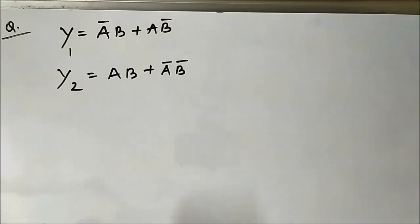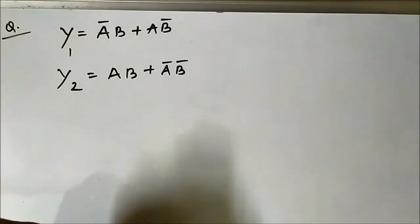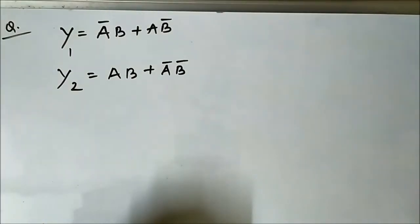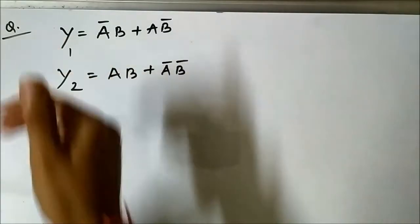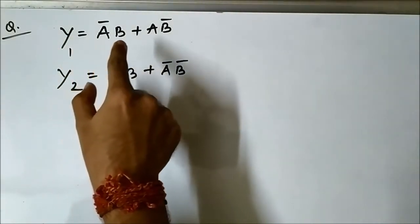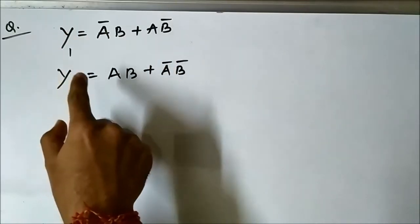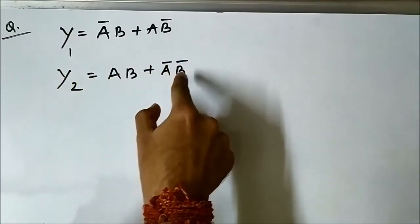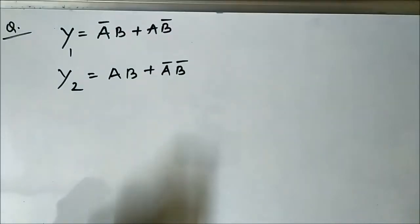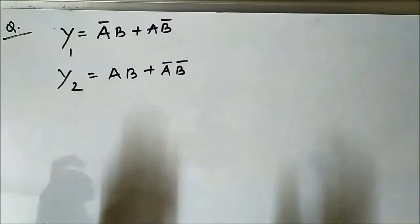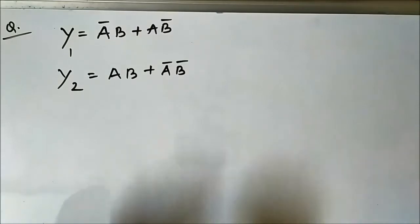Here we have another Boolean expression to design using digital logic gates. We have two expressions: y1 which is ā·b + a·b̄, and y2 which is a·b + ā·b̄. First we have to determine what logic gates are required.